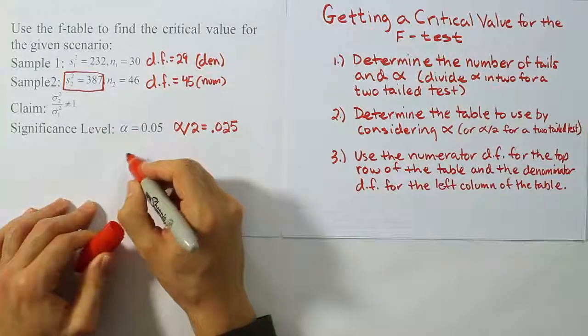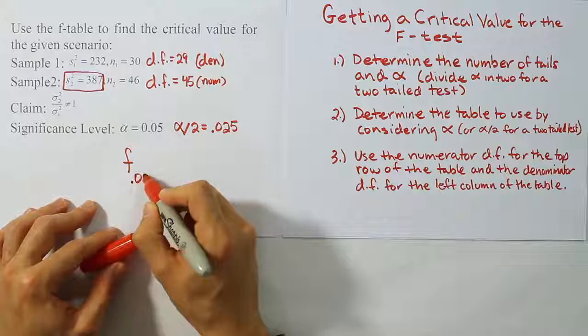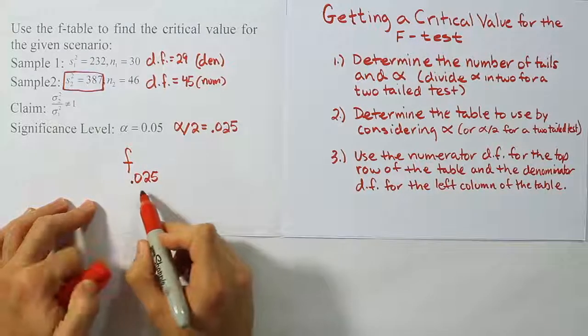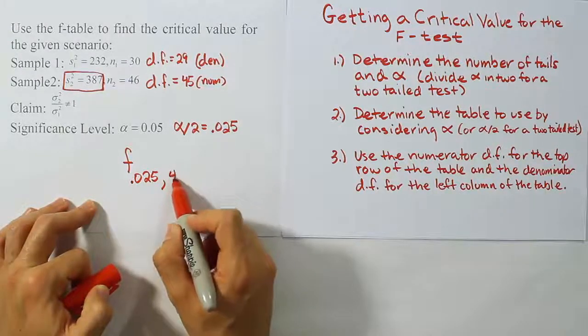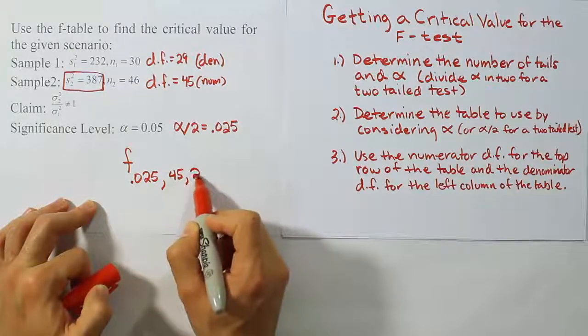So essentially when we go to the table, we'll be looking up this: f of 0.025, which just means we're going to go to the 0.025 table. We're going to look up degrees of freedom 45, 29.